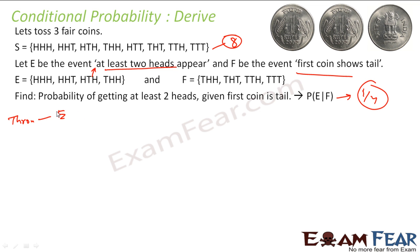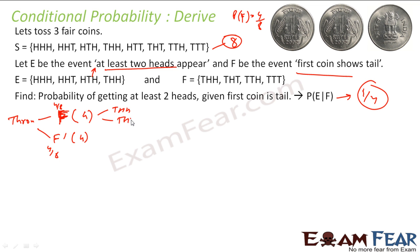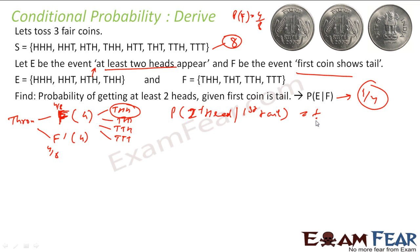We need to find P(E|F). F contains THH, THT, TTH, and TTT — four elements. The probability of F is four by eight. From F, the only outcome with two or more heads is THH. So probability of two heads given first toss is tail equals one by four. This is what we found graphically.